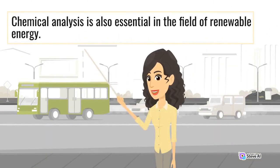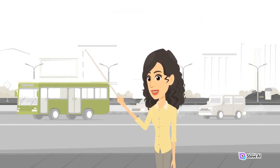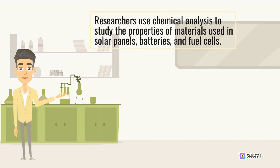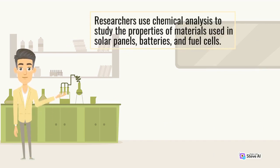Chemical analysis is also essential in the field of renewable energy. Researchers use chemical analysis to study the properties of materials used in solar panels, batteries, and fuel cells.